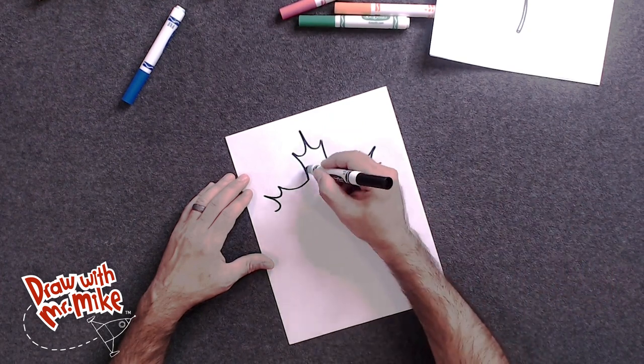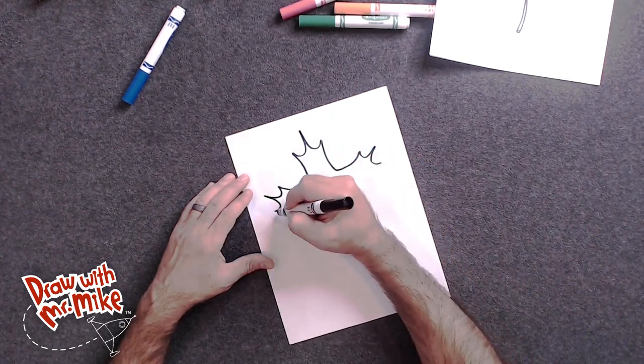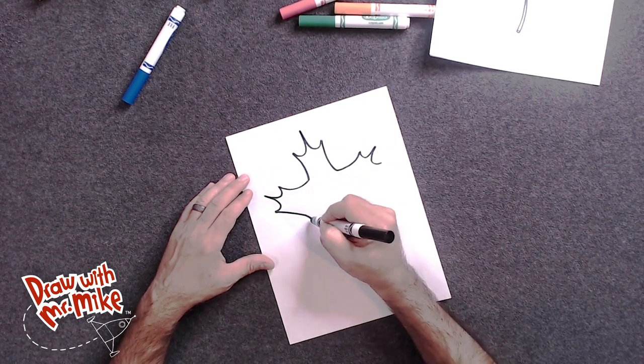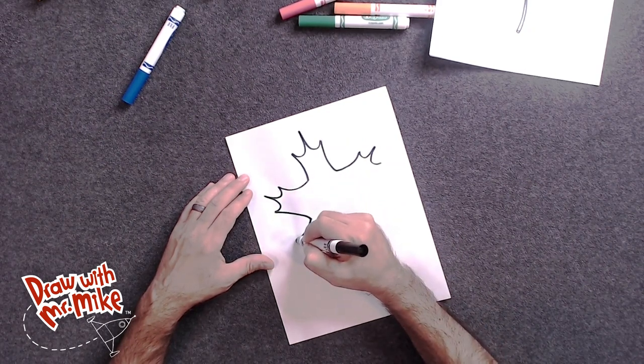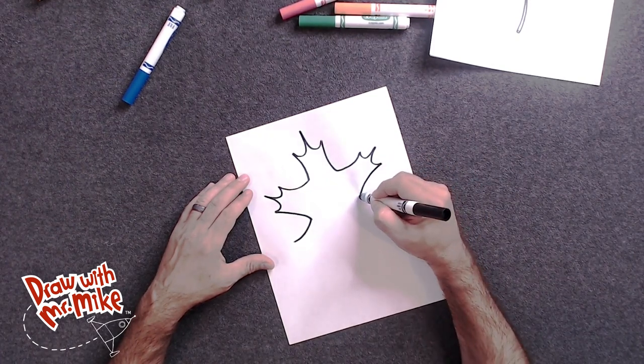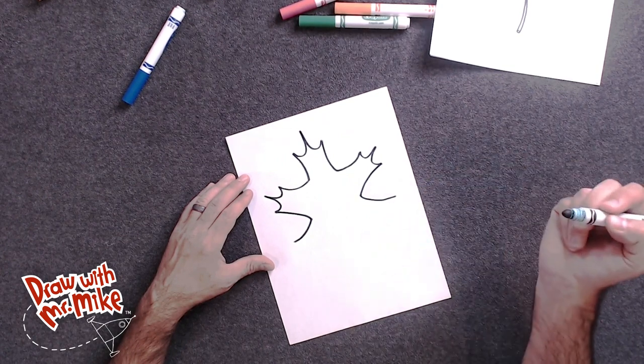And now we'll do those arcs again. See, we're doing a pattern. So a wide arc here. And then another wide arc out. And we'll do a wide arc in. And then another wide arc out. Just like that.